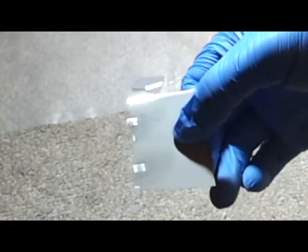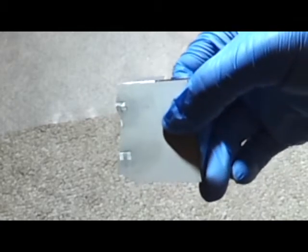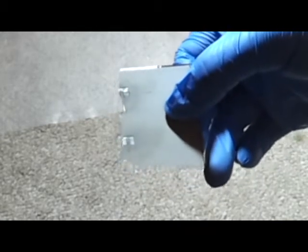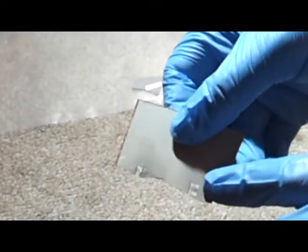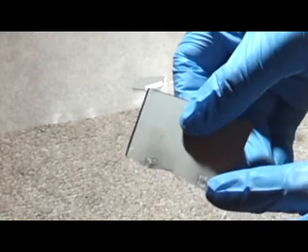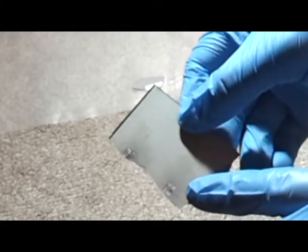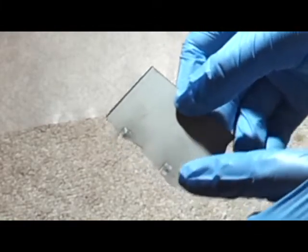Now I've ruined probably five solar cells trying to get the back tab, the back side of the solar cell wired up or tabbed up. You can see that the silver oxide just melts right off, and the solder will not stick to anything on this solar cell now.